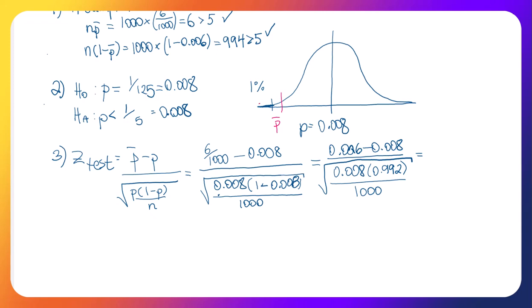Okay, and that gives on the bottom here in this denominator 0.002817. And on the top, that's negative 0.002. And that gives negative 0.71 for our Z test.